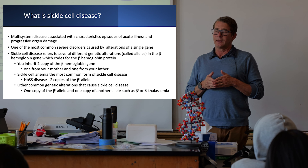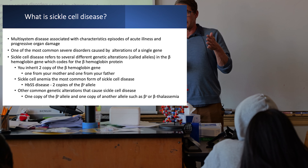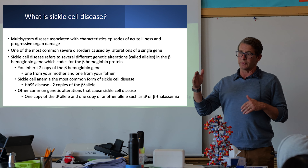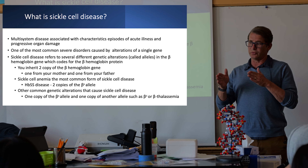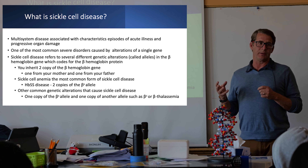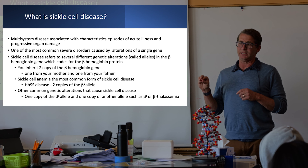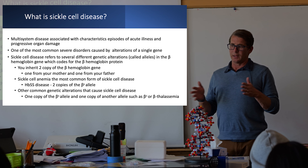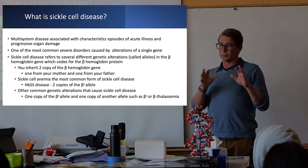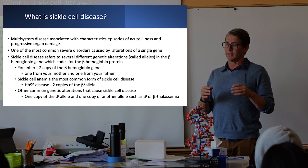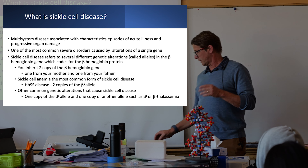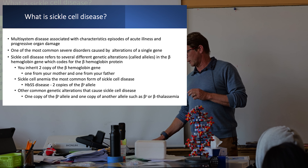You can also have one copy of the S mutation and another different mutation, such as hemoglobin C or beta-thalassemia, and a combination of those two different mutations can also cause sickle cell disease. Sickle cell disease is a clinical diagnosis requiring two copies of related mutations. Sickle cell anemia is a subset of sickle cell disease, specifically where you have two copies of the same S mutation. I'll mostly be talking about sickle cell anemia as it's the most common.